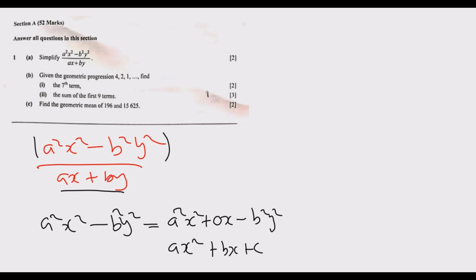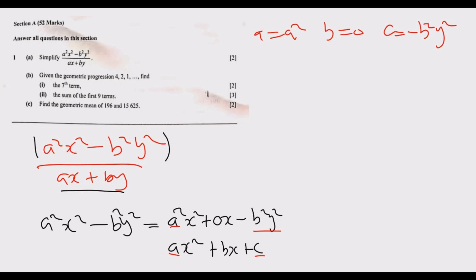From the quadratic form, we can identify: the coefficient 'a' equals a squared, 'b' equals 0, and 'c' equals negative b squared y squared. The best way to factorize a quadratic is to find the product, which is a multiplied by c — so that gives us negative a squared b squared y squared.